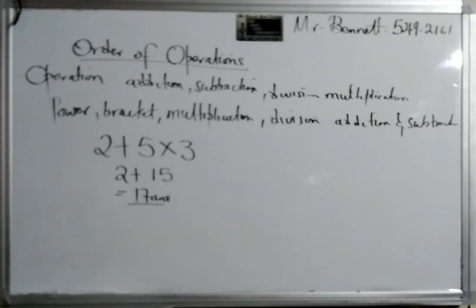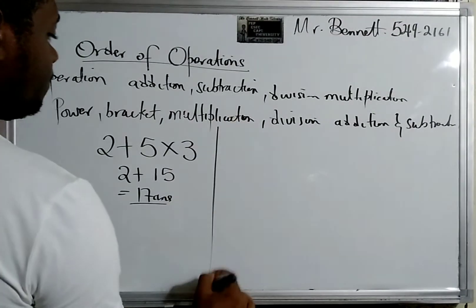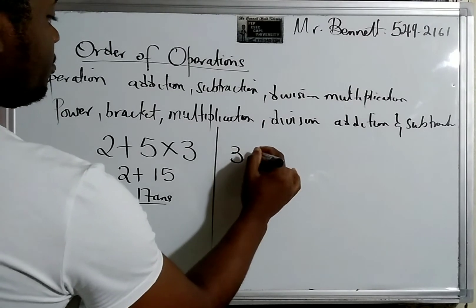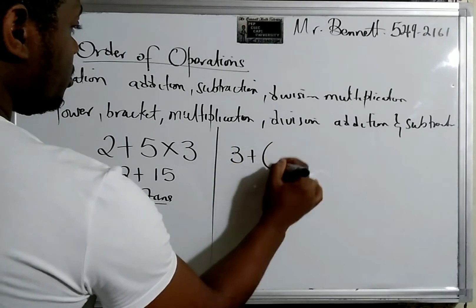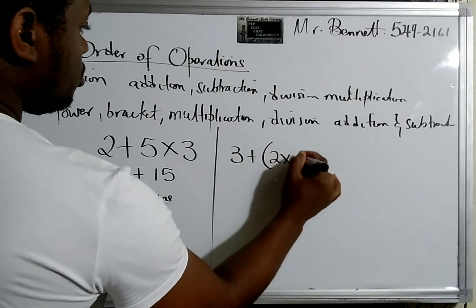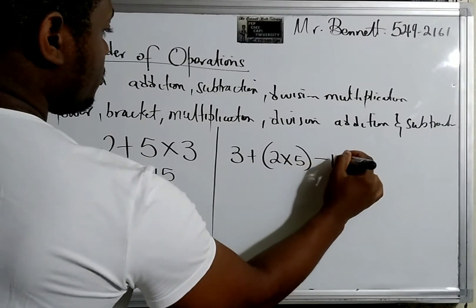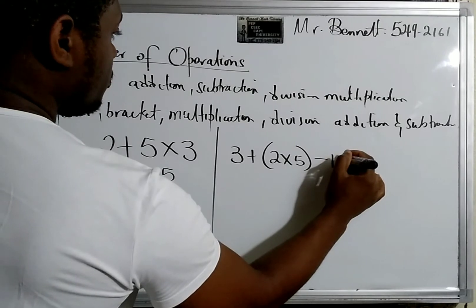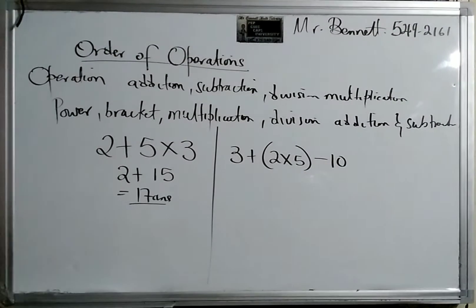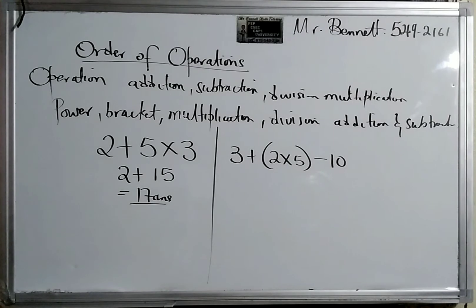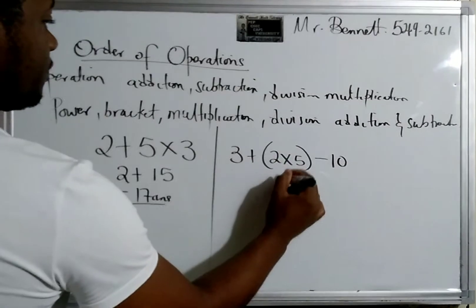So guys, we must follow the order of operations. Let us look at the next one. Let's say we have 3+2×5 minus... So we must do the bracket first. So 2×5 = 10.